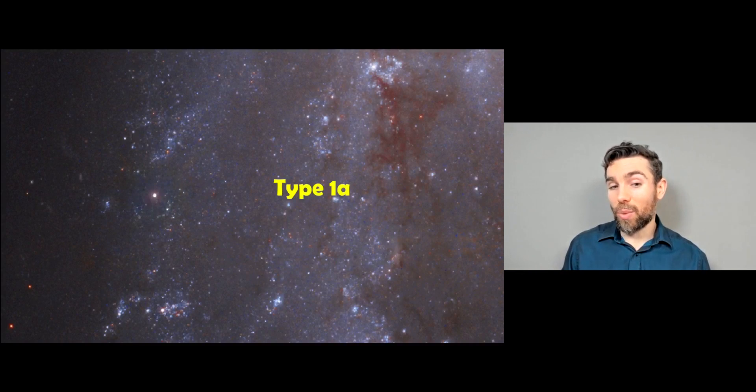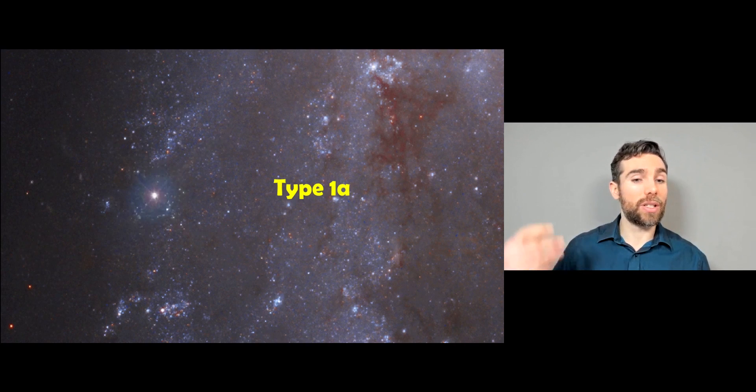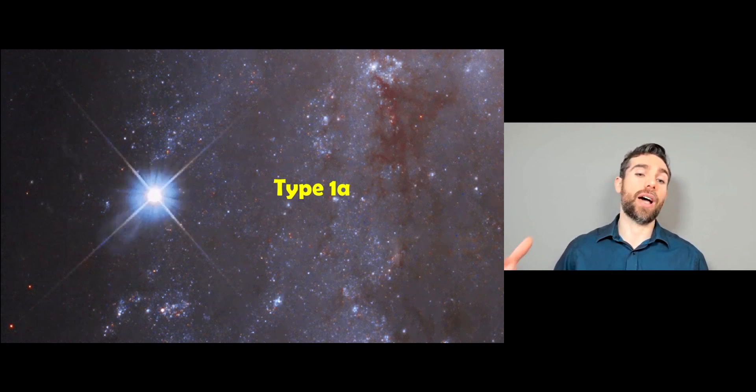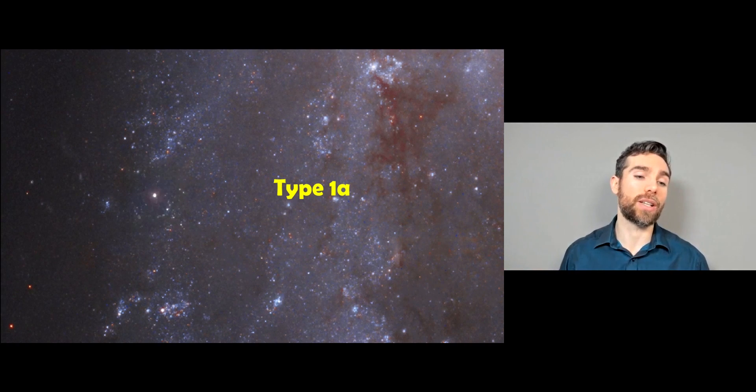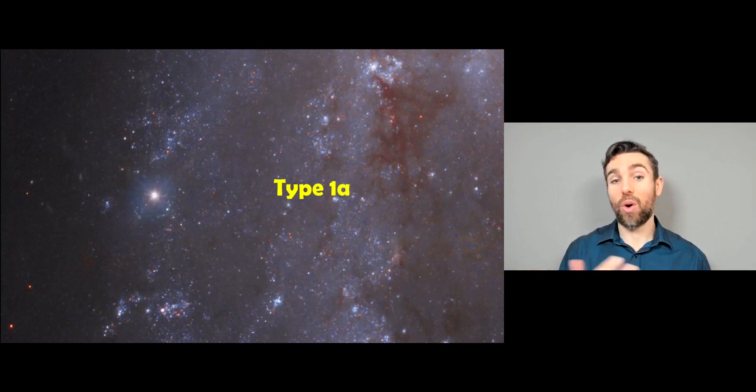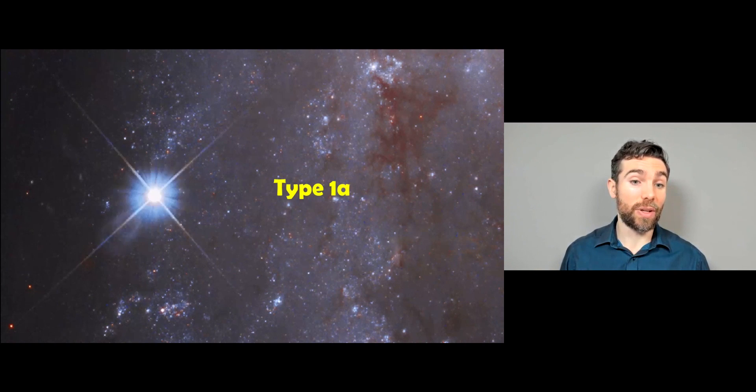Now here's an example of a type 1a that was caught, I think, by Hubble, and you can see it kind of dimming down after it occurred. And again, you can see just how bright that is in comparison to all of the other stars in the field there, really.